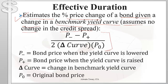In the formula, P-minus is the bond price when the yield curve is lowered, P-plus is the bond price when the yield curve is raised, delta-curve is the change in the benchmark yield curve, and P-naught is the original bond price. Notice this formula looks very similar to the approximate annual modified duration formula — the difference is we use the change in the benchmark yield curve instead of the yield to maturity.